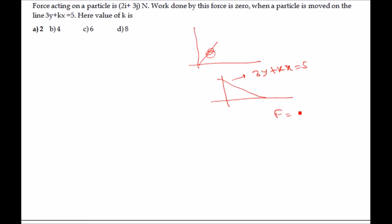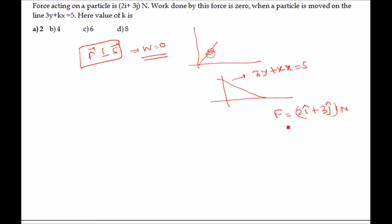The force is given as 2i + 3j newton. Work done will be 0 when the force and displacement are perpendicular to each other — that is, when the angle between force and displacement is 90 degrees, the work done is zero.